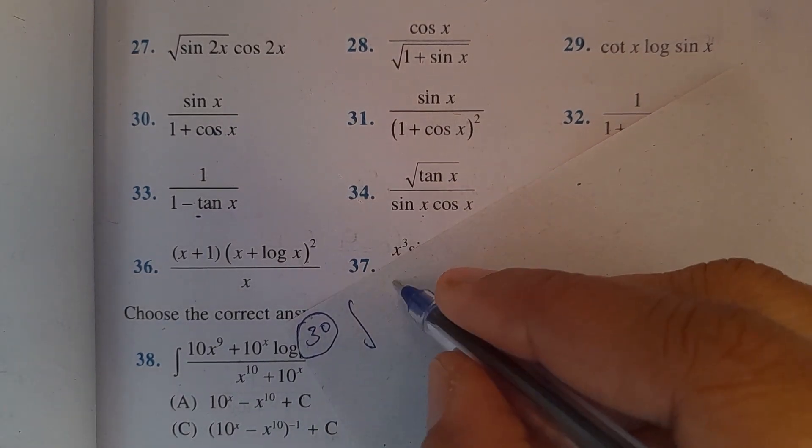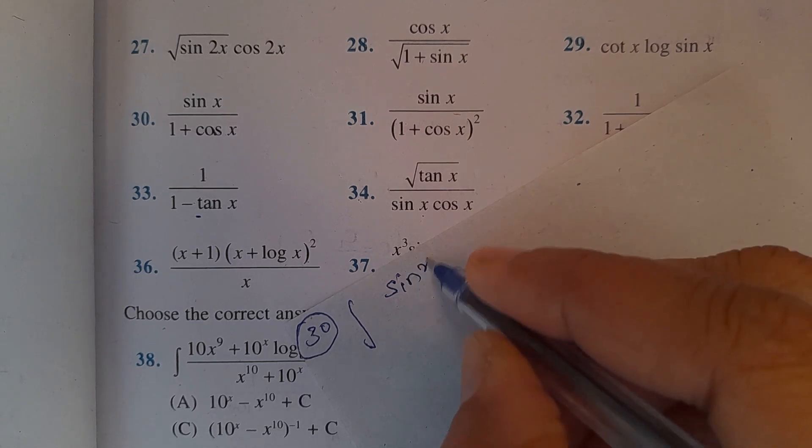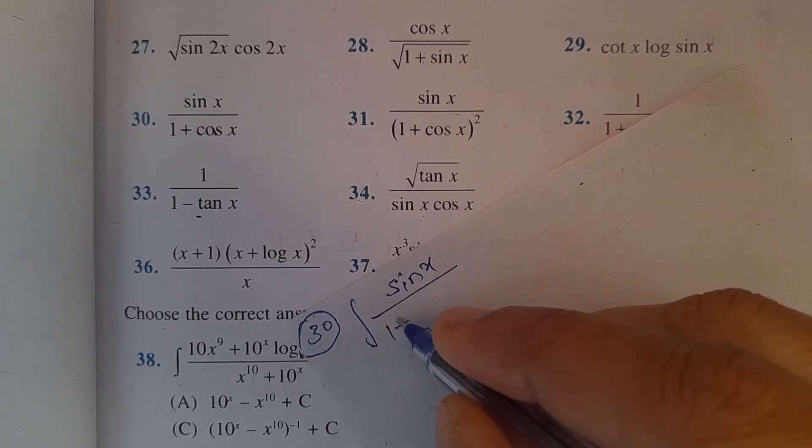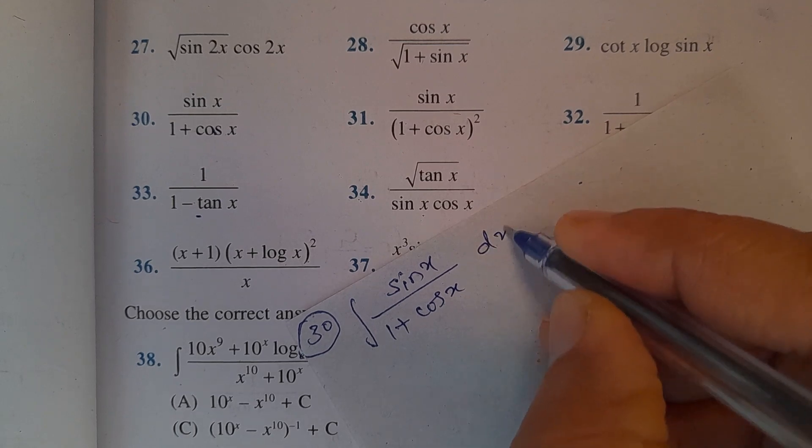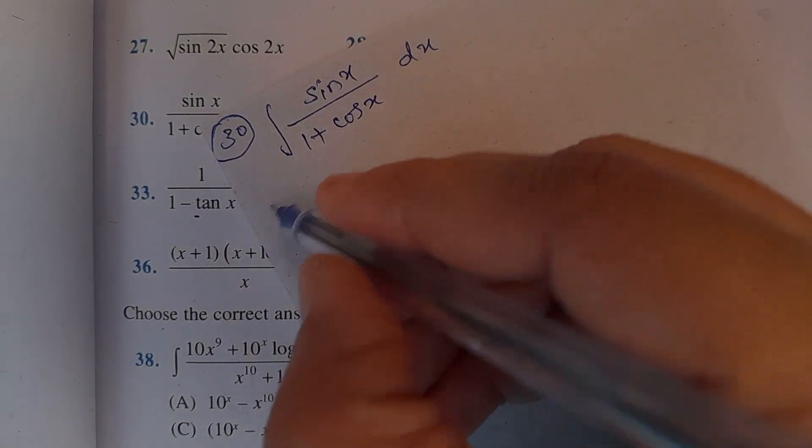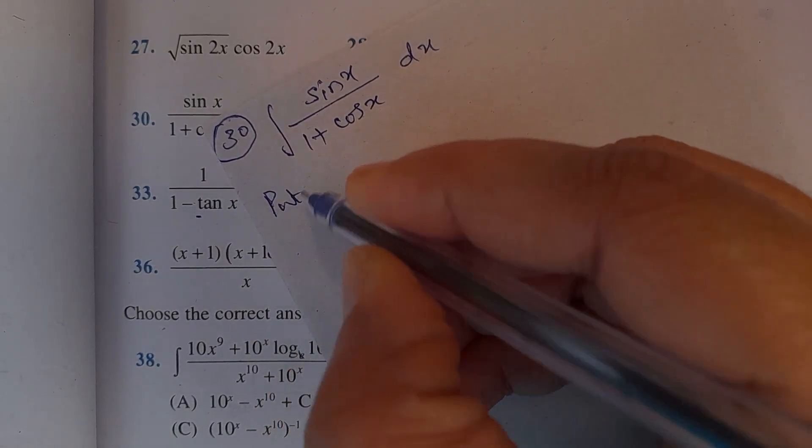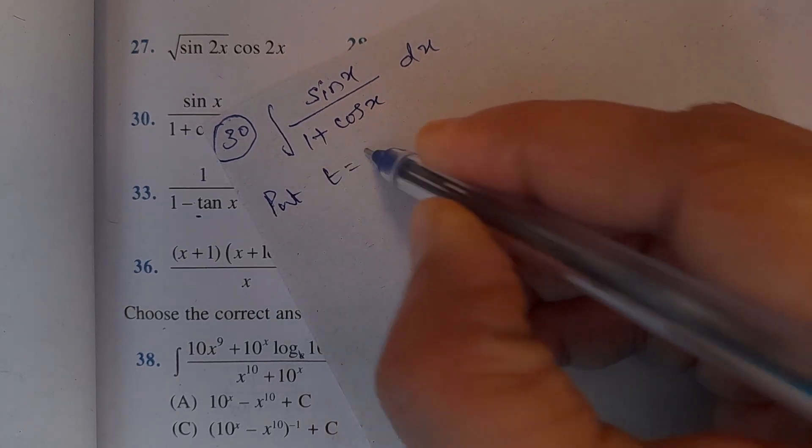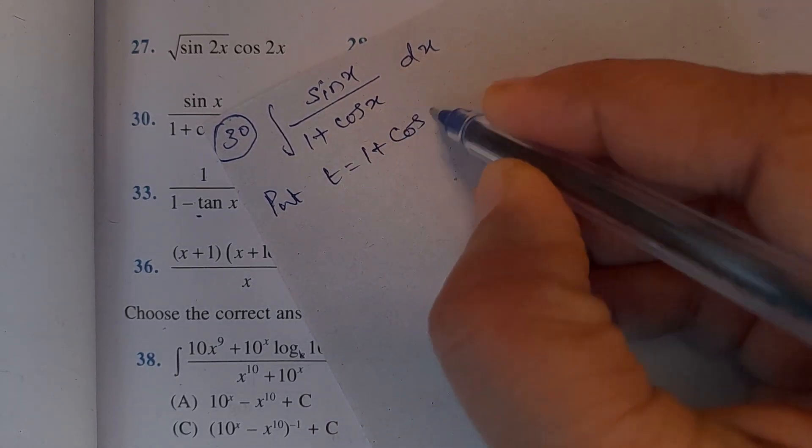Integral of sin x divided by 1 plus cos x dx. By substitution method, put t equal to 1 plus cos x.